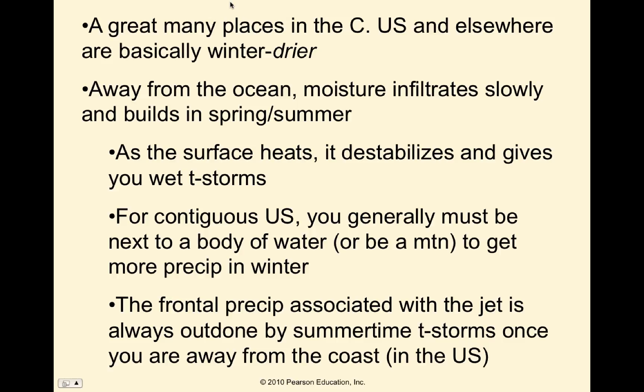A great many places in the central U.S. are basically winter drier — not classified as completely winter dry in the Köppen scheme, but the summertime thunderstorms deliver more precipitation than the wintertime jet-driven storms. Away from the ocean, moisture infiltrates slowly and builds in spring and summer — dew points go up, and once the surface starts to heat from the intense sun, it destabilizes the atmosphere and gives very wet thunderstorms. For the contiguous U.S., you generally must be next to a body of water or be a mountain to get more precipitation in winter. In the Great Plains, summertime thunderstorms give more moisture than jet-driven storms, which is important for agriculture — you're getting the precipitation when you need it for growing plants.